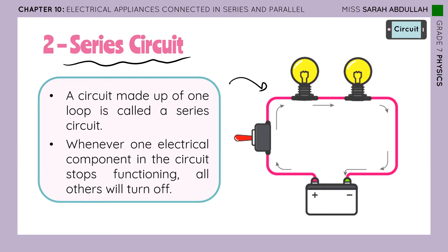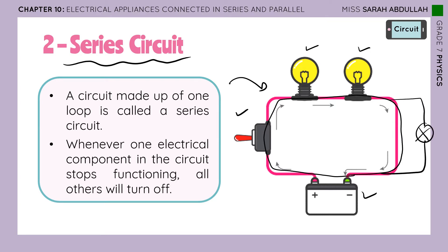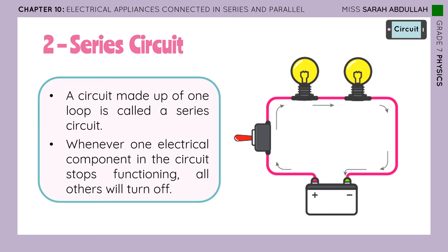What do we mean by a series circuit? Basically, the first lamp, the second lamp, the switch, and the battery all belong to the same loop — they are all found in one loop. This is a series circuit; there is no separate loop with another lamp. These two lamps are connected in series because they have only one common terminal — as if holding hands at one point, not two common terminals.